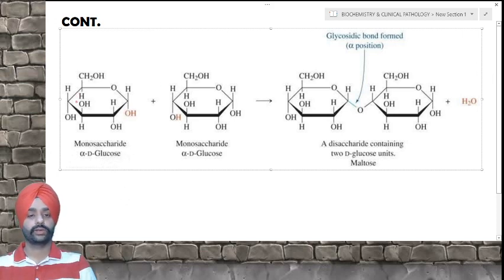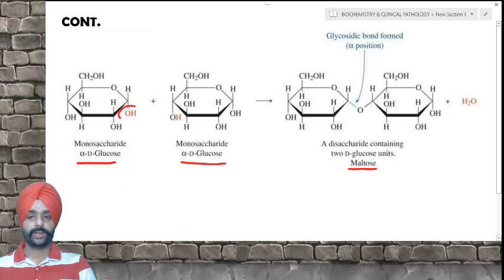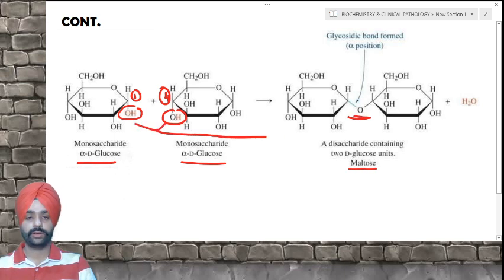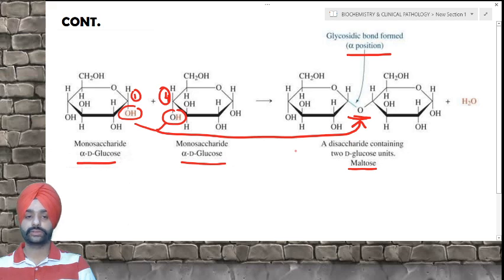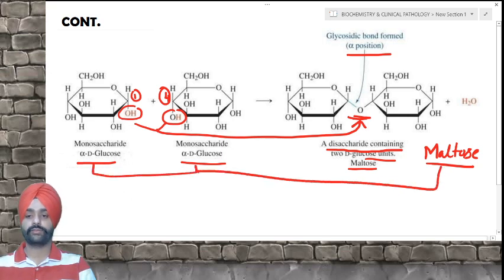Here we can see how this occurs. These are two alpha-D-glucose molecules shown in cyclic representation. The OH group at the first carbon and at the fourth carbon tend to form a glycosidic linkage at the alpha position. This is known as a glycosidic bond and forms a disaccharide known as maltose, which comprises two units of alpha-D-glucose.